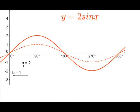If we change B back to 1 and change A to 2, we can see how the amplitude changes. Our diameter changes from positive 1 to negative 1 to positive 2 and negative 2.